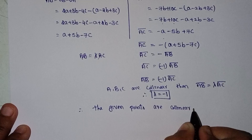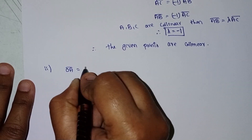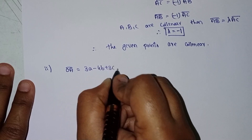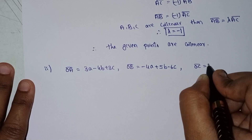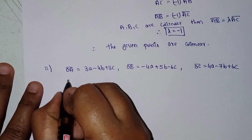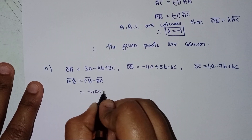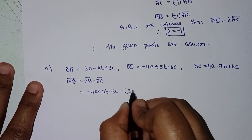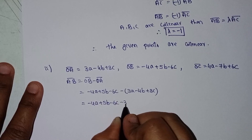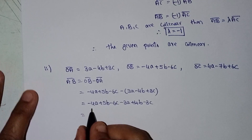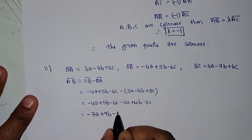Next, the second sub-problem. Let O be the origin. OA equals 3a minus 4b plus 3c, OB equals minus 4a plus 5b minus 6c, OC equals 4a minus 7b plus 6c. AB equals OB minus OA: minus 4a plus 5b minus 6c minus (3a minus 4b plus 3c), giving minus 7a plus 9b minus 9c.